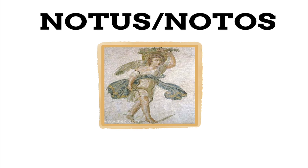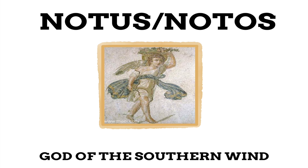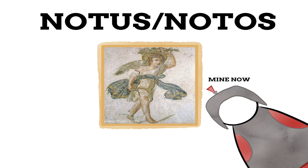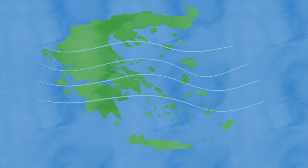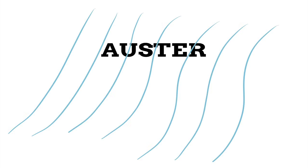Notos is the Greek god of the southern wind. When this god came to the Romans, however, they came to call him in Latin by a different name: Auster. When the Greek wind system was adopted by the Romans, the name Auster became used for the south wind.